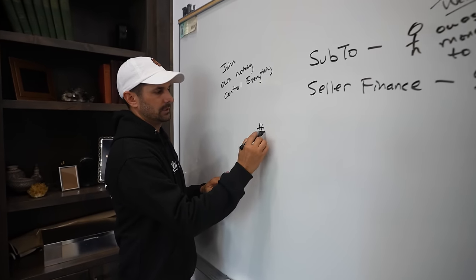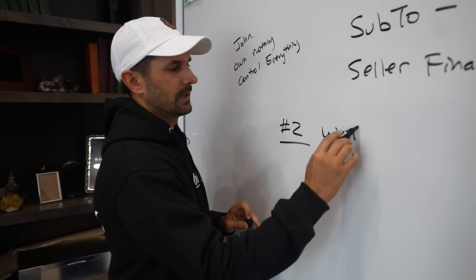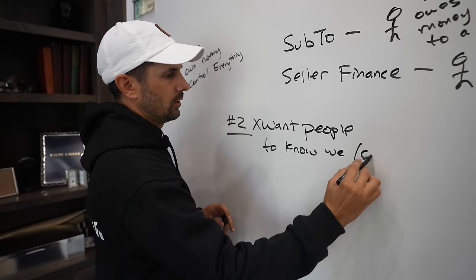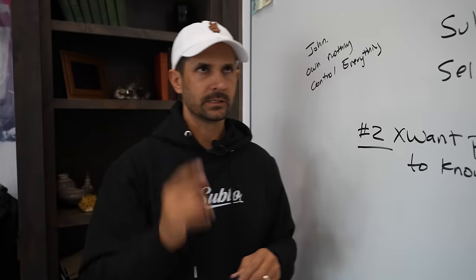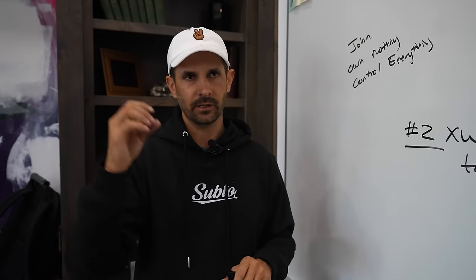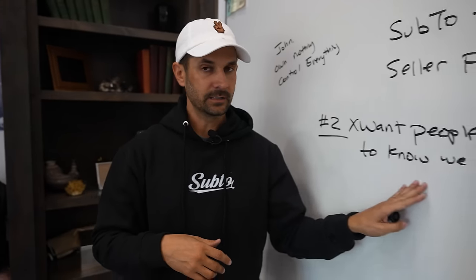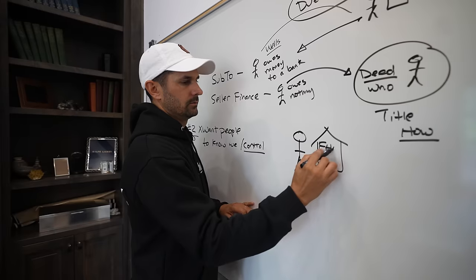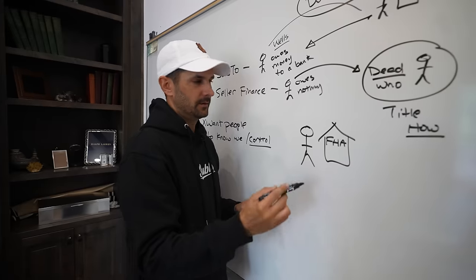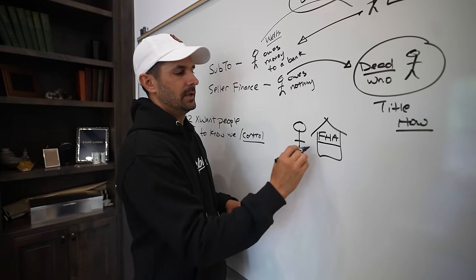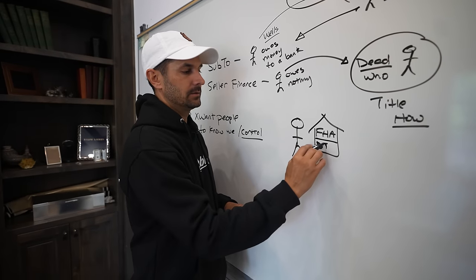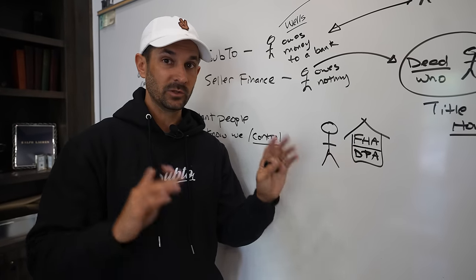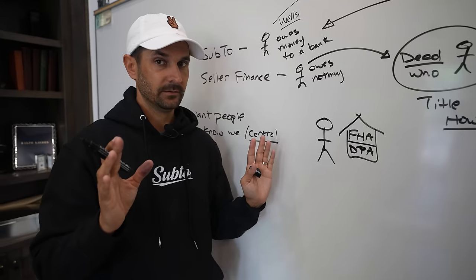The second reason we use executory contracts is we don't want certain people to know we own or control the property. For example, I just bought a property at 1006 South Southern Avenue, Unit 30 — it's on a recent real deal episode I self-filmed with my iPhone. The seller bought a house with an FHA loan, meaning he put almost nothing down. Not only did FHA give him a great loan, but he also went to the state of Arizona and got a down payment assistance program. So he has two loans against the property — the FHA loan and the DPA loan — and literally bought this house with no money out of his pocket.